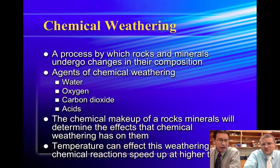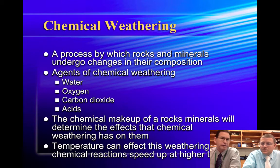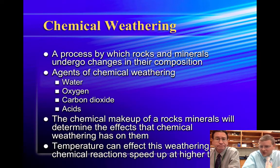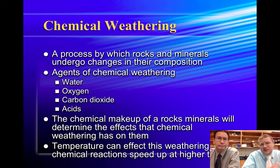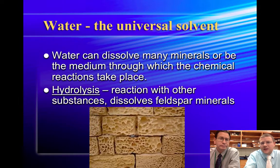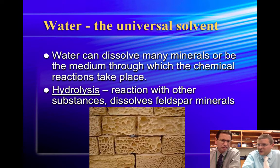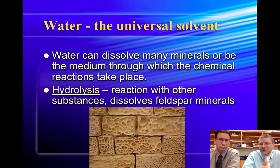Now let's look at the chemical forms. Chemical weathering is when things break down from the interior of the rock — it's a chemical change. Things that can cause chemical weathering are water, oxygen, carbon dioxide, and acids. Temperature also affects this; higher temperatures in warmer climates will speed up reactions. The first example in chemical weathering is hydrolysis, where water dissolves minerals out and can pit holes in rock layers — it looks a lot like an alien landscape.